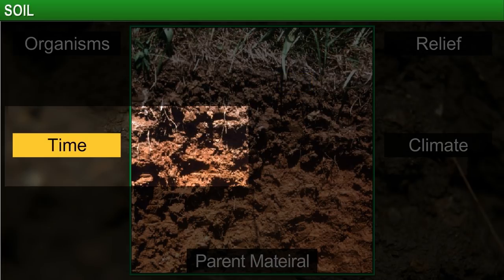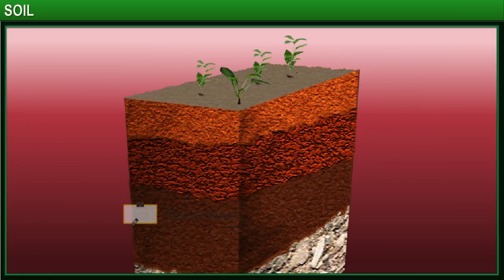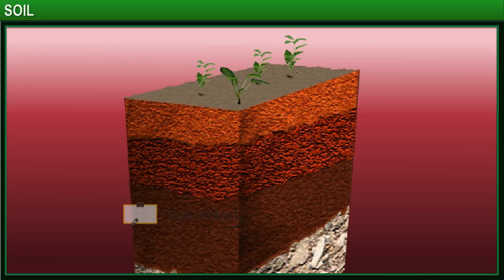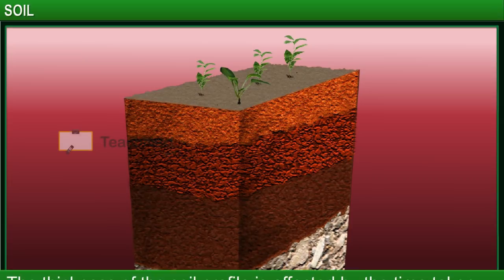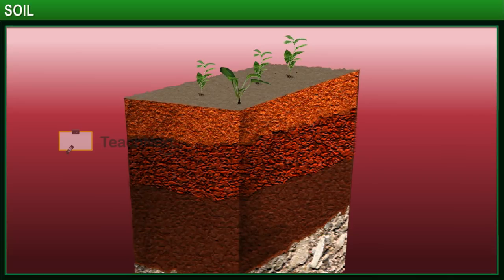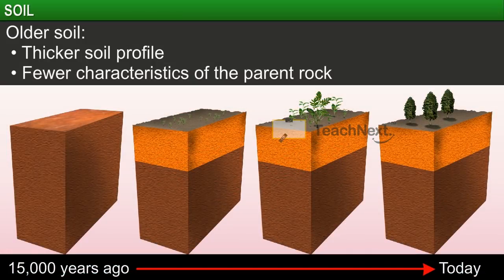But how about the thickness of the soil profile? A vertical section that shows different layers of soil is called a soil profile. The thickness of the soil profile is affected by the time taken for the soil to form. Here is a diagrammatic representation of a typical soil profile. Older soil has a thicker soil profile, as over time several layers of soil have been deposited and formed.